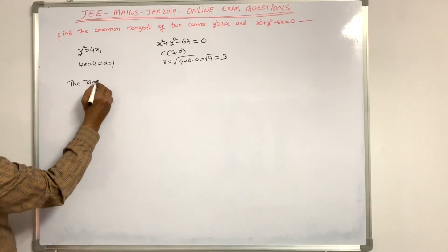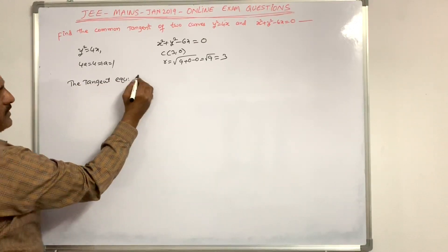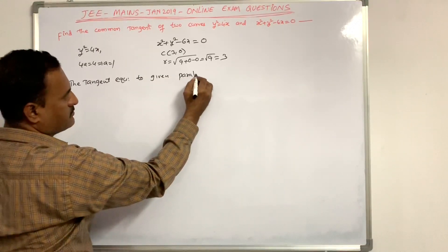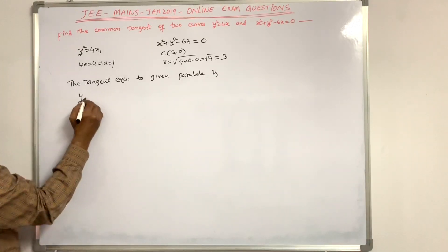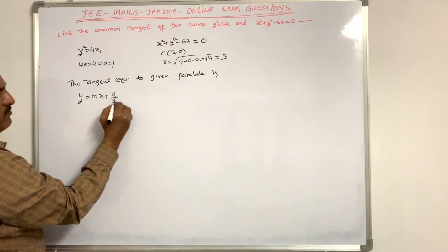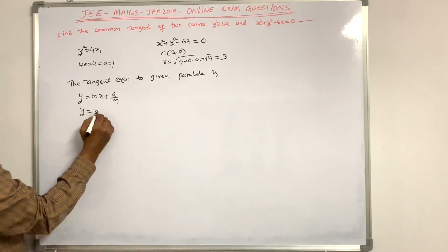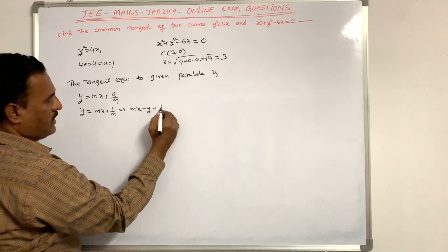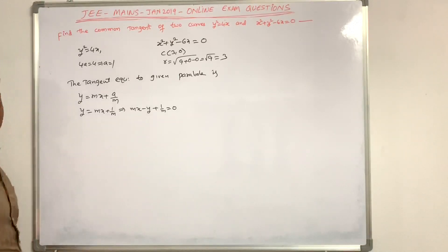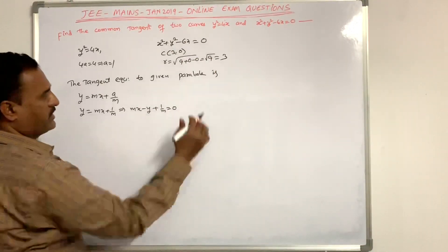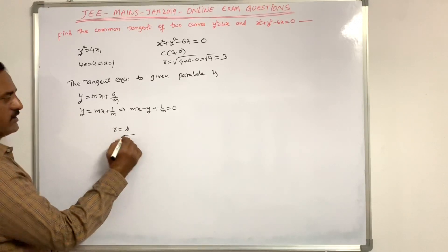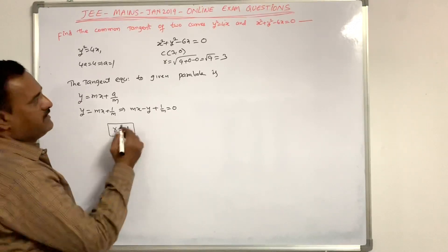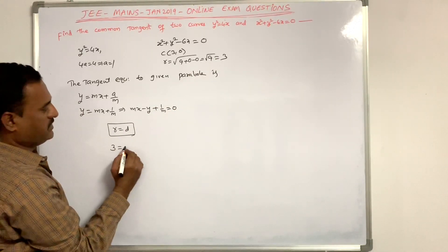The tangent equation to the parabola is y = mx + a/m. With a = 1, this becomes y = mx + 1/m, or equivalently mx - y + 1/m = 0. Since this tangent line is also tangent to the circle, the radius equals the perpendicular distance from the center to the tangent line. The radius is 3.